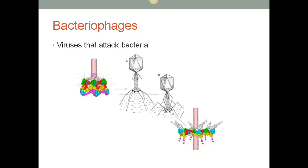Bacteriophages are viruses that attack bacteria. They look like a virus — they basically inject their material into the host cell and the virus is killed. We occasionally try to use this in a helpful way. Certain viruses are not treatable, such as hepatitis, so we try to prevent those with a vaccine.